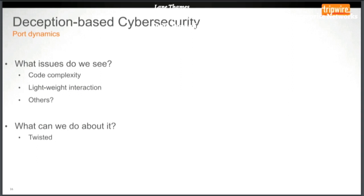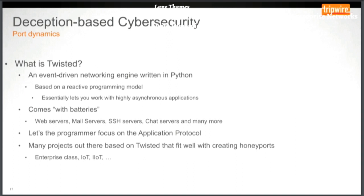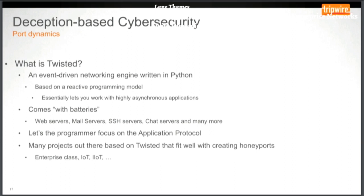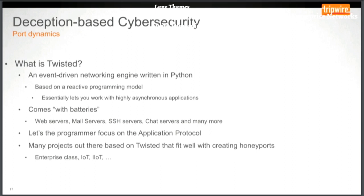There turns out to be an interesting Python-based framework called Twisted that can help solve some of these problems. Twisted is an event-driven networking engine written in Python, based on a reactive programming model, that lets you work with highly asynchronous applications. As people say, Twisted comes with batteries — there's already a lot of built-in server applications: web servers, mail servers, SSH servers, and more. Twisted lets the programmer focus on the actual application protocol while Twisted takes care of everything else. There are also many existing open-source projects built on Twisted — including enterprise-class, IoT-based, and industrial Internet of Things projects.